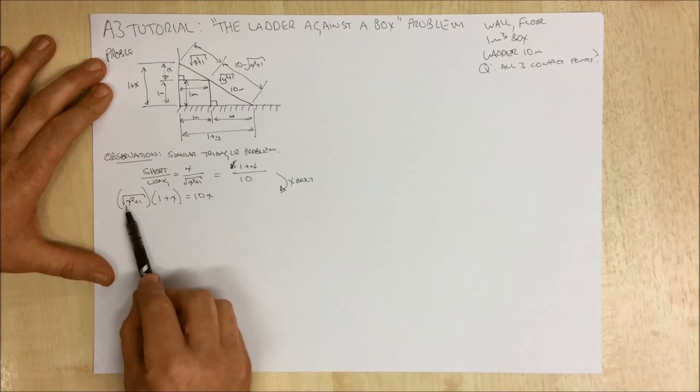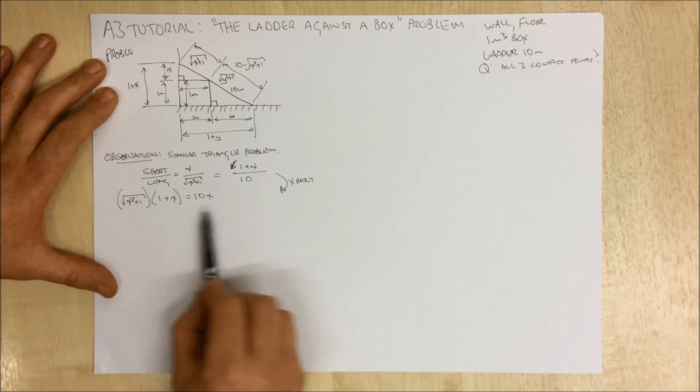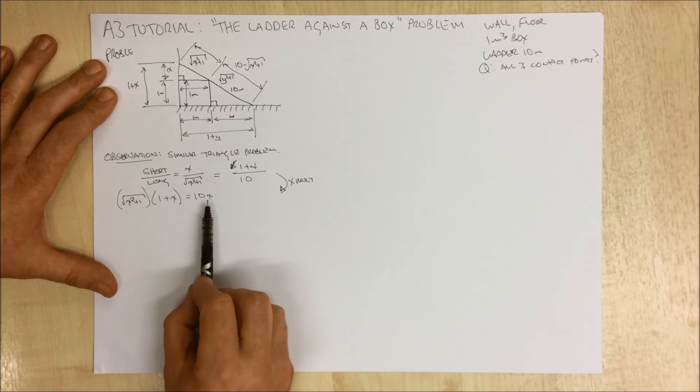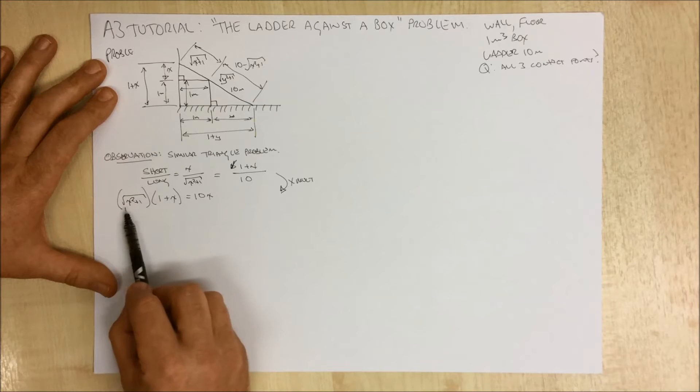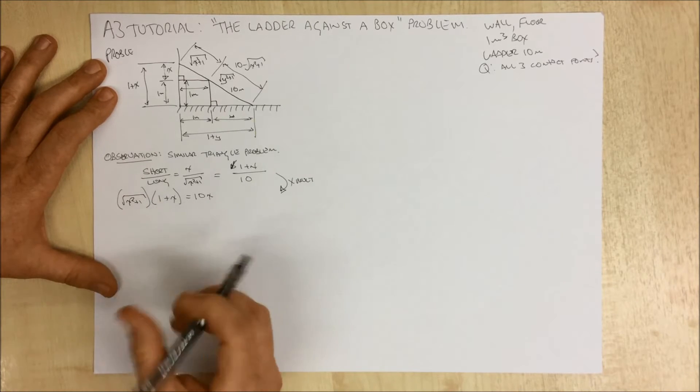Now we've got a square root term here, and the whole objective is to simplify this down, because in all of these expressions we've only got one unknown, and that's x.